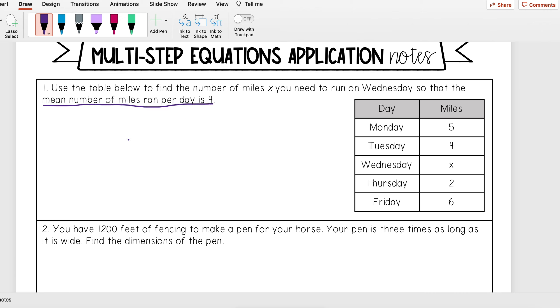Mean is the same thing as average. To find the average, you add up everything and divide it by the number of items you have. So I'm going to add up everything from this table: 5 plus 4 plus x plus 2 plus 6, and divide it by the number of items, which is 5. The problem tells me I want this average to equal 4. So I took the information from the problem to create this equation, and now we can go ahead and solve this.